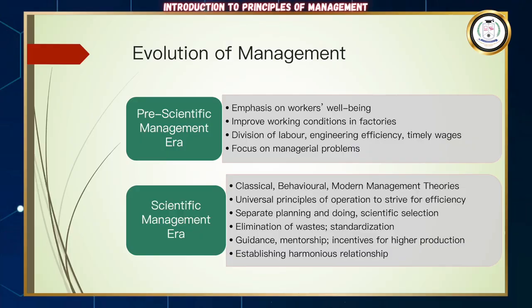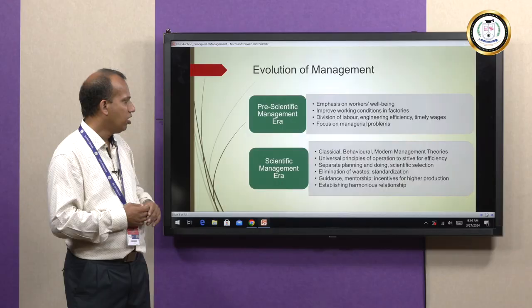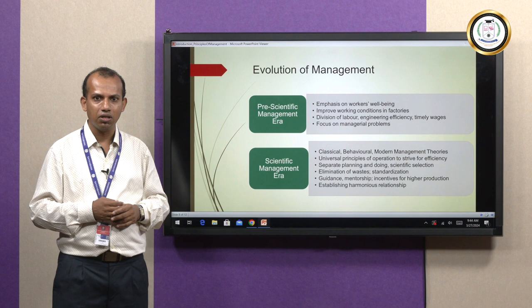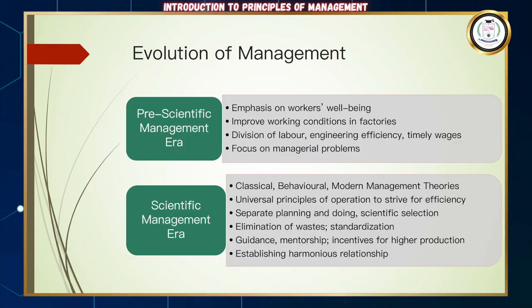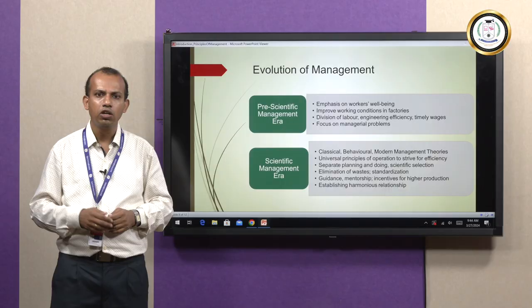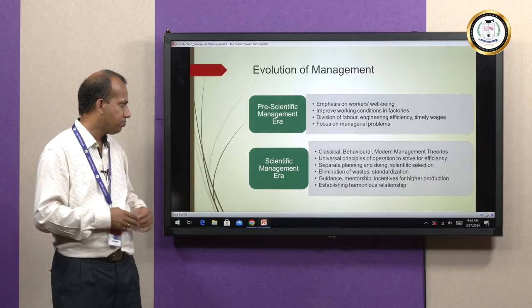During the scientific management era, various types of theories emerged: classical — including administrative and scientific theories — behavioral theories focusing on human values, and modern management theories such as systems theory and contingency theory. The aim was to universally apply principles of operation to extract efficiency for both people and operations.